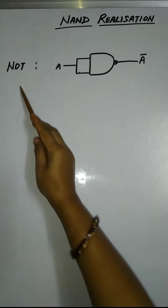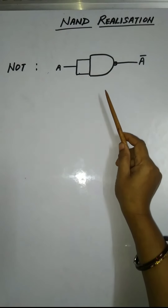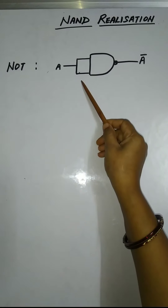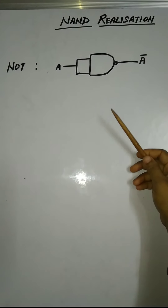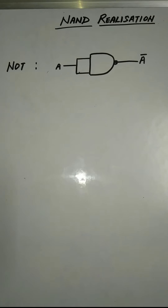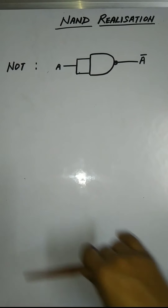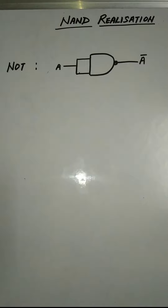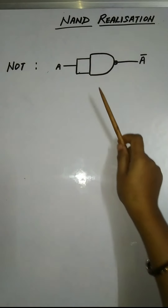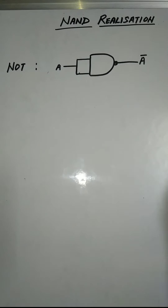We can implement a NOT gate by using NAND gate like this — by clubbing the input lines as a single line. It will act like a NOT gate. In any gate other than NAND, we use more than two input lines. So here, I am just clubbing two inputs of NAND gate to act as a NOT gate.